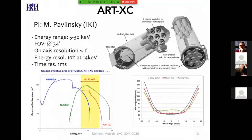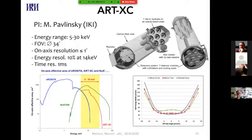ART-XC is a PI instrument led by Mikhail Pavlinsky from IKI. It is a hard X-ray telescope operating in the 5 to 30 keV range with a field of view of 34 arc minutes and on-axis resolution of less than about one arc minute — a relatively large, solid hard X-ray focusing telescope. There are not that many — its bigger brother is NuSTAR. Here you see a comparison of the effective area of ART-XC in red compared to NuSTAR in green, and compared to eROSITA, which is much more sensitive but operates at softer energies. Above about four or five keV, ART-XC on SRG is the most sensitive telescope.